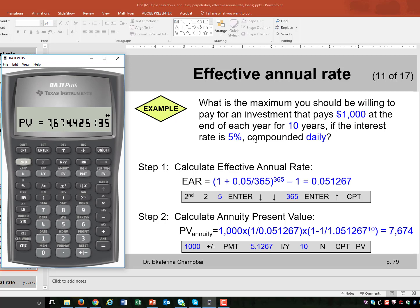So this is a two-step problem in which the effective annual rate is the first step you do. And that's part of a much bigger problem. Something like finding annuity present value.